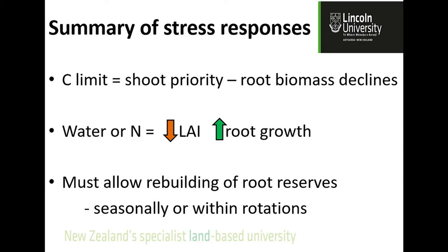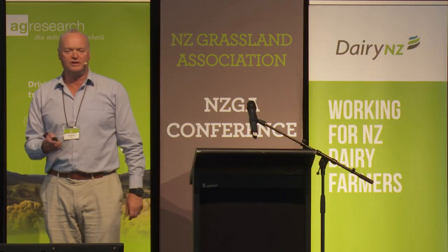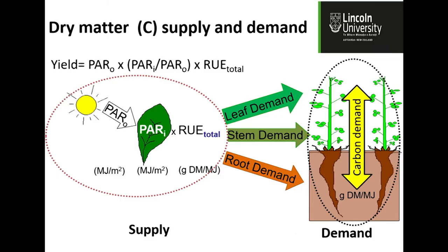At some point we must allow our plants to rebuild their reserves, either seasonally or within rotations. Plants 101: there's a big yellow thing out there that gives us unlimited energy — our job is to capture it. The solar panel — the leaf area — is what we use to capture it.